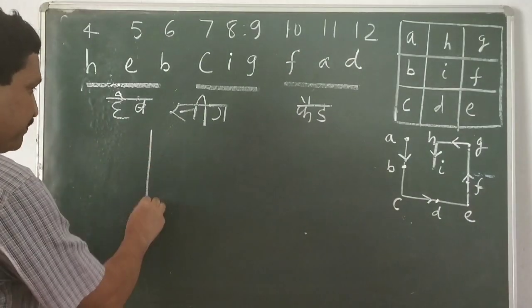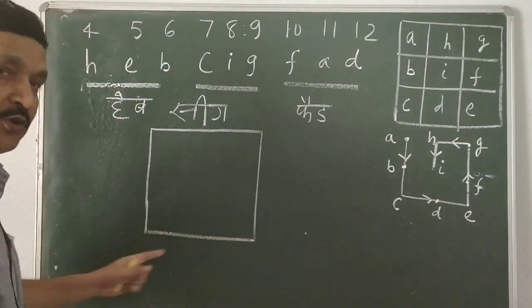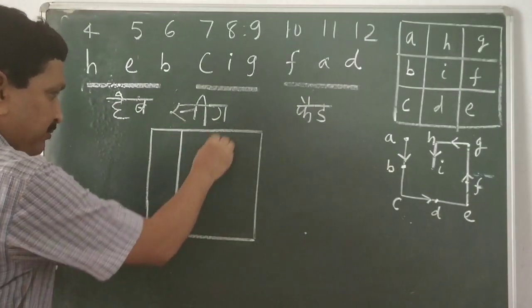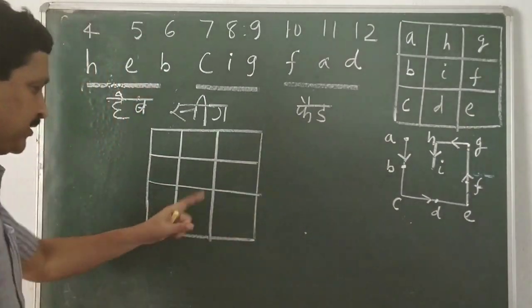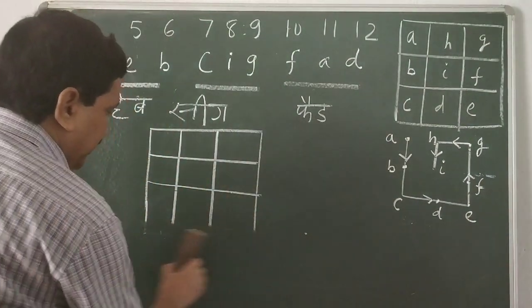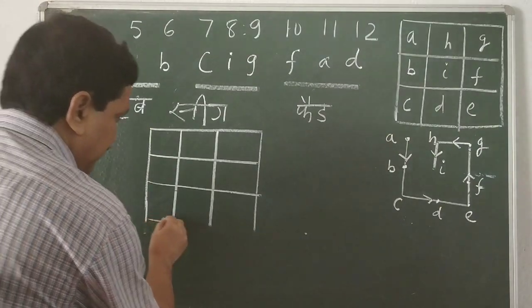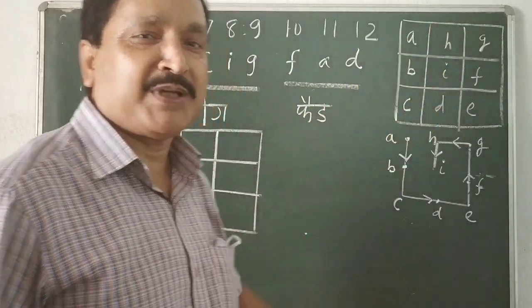So immediately, this is the solution square with the 9 small squares. The 9 small squares are to be filled with 9 consecutive given numbers in such a way that the sum vertically, horizontally and diagonally must be same.